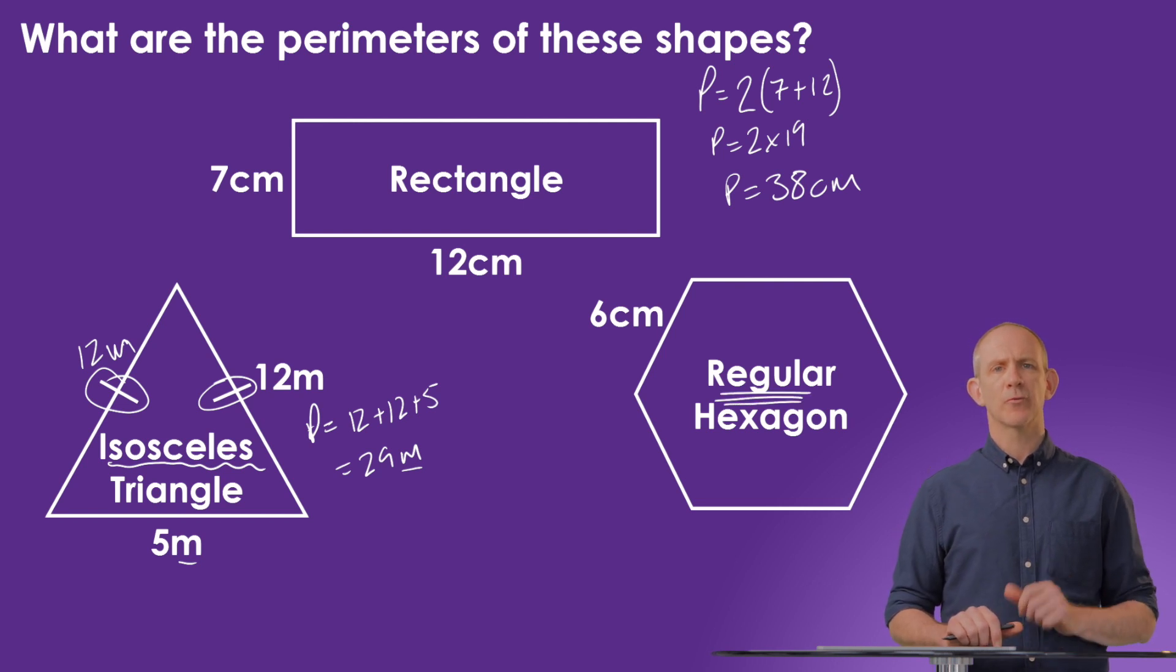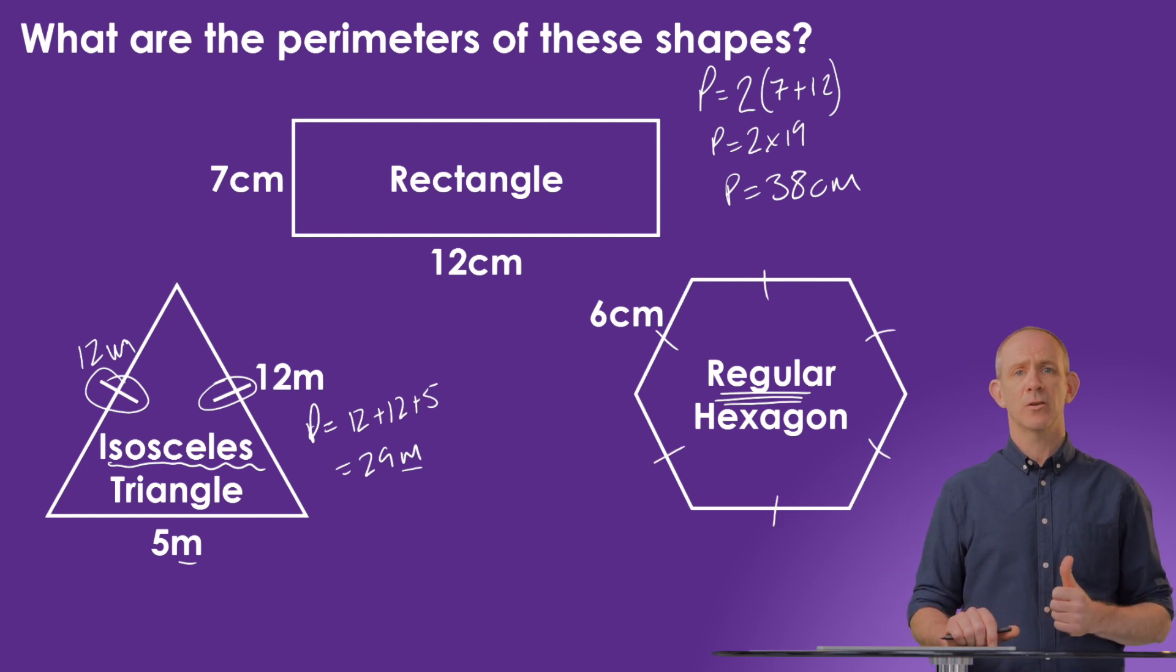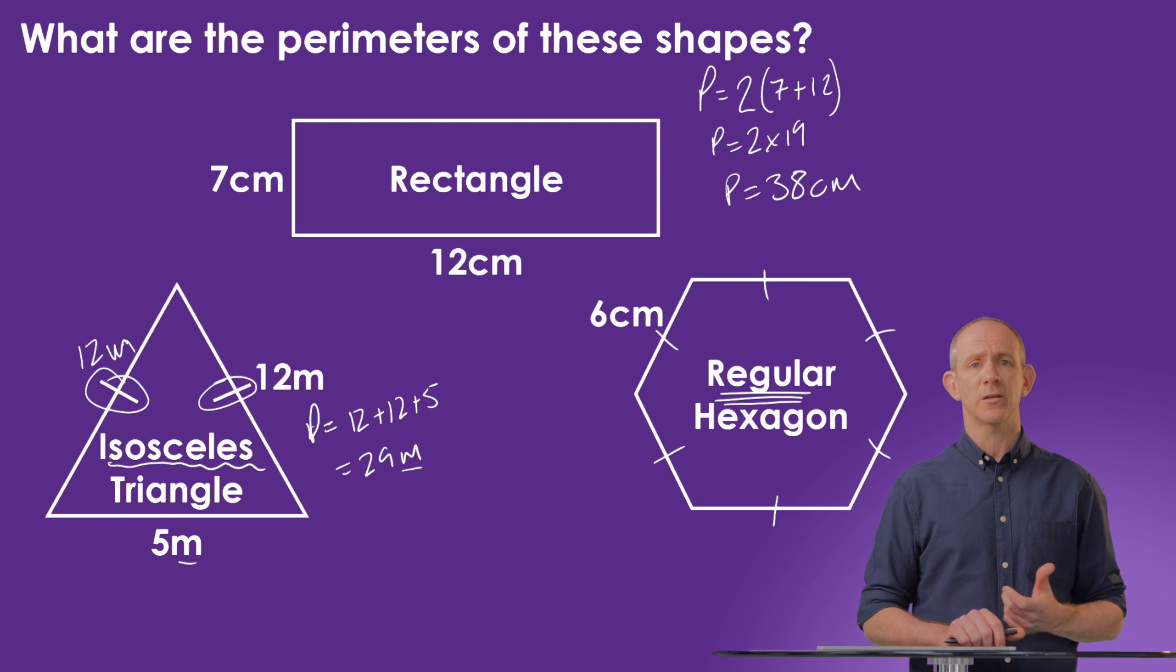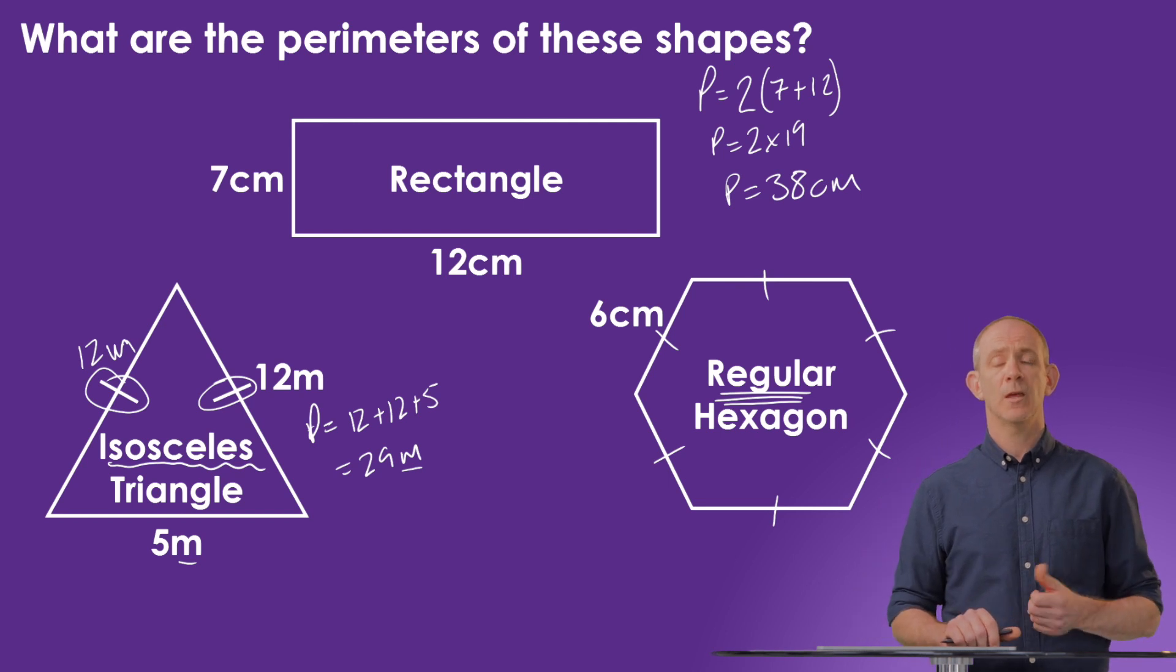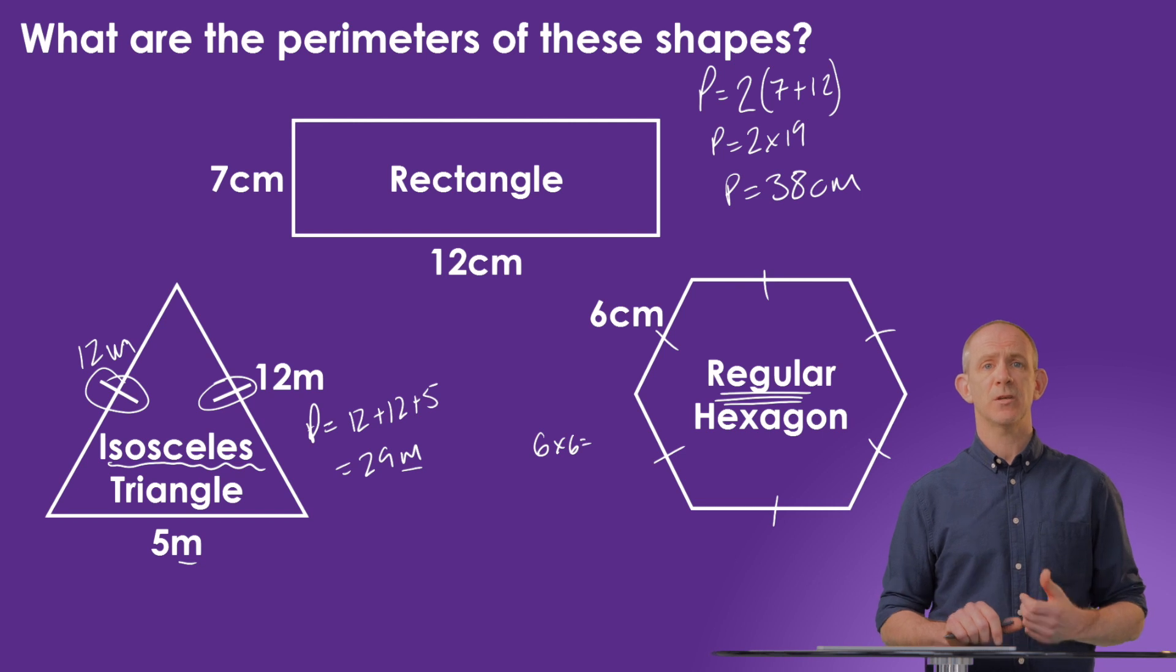In the next polygon we've got a regular hexagon. They've only given us the measurement for one of the sides of this hexagon, but because it's a regular polygon we know that all the sides are the same length. So we can assume that all these sides are 6 centimeters. As we're told it's a hexagon, we know there's going to be 6 sides. So we can do 6 times 6, which will give this a perimeter of 36 centimeters.